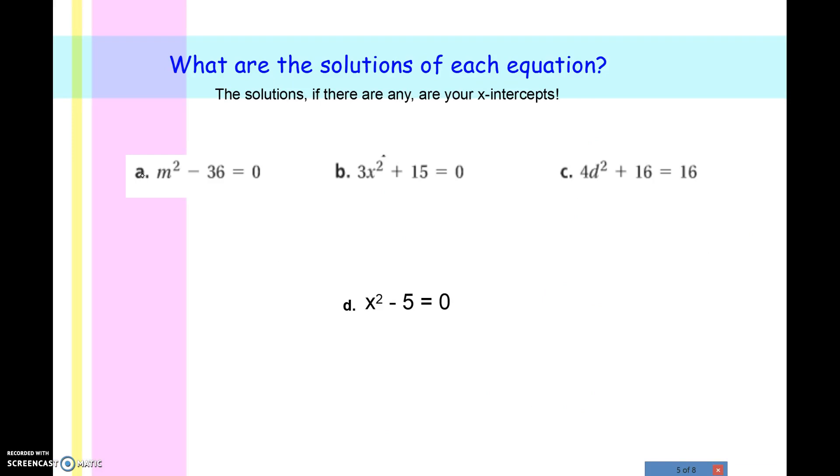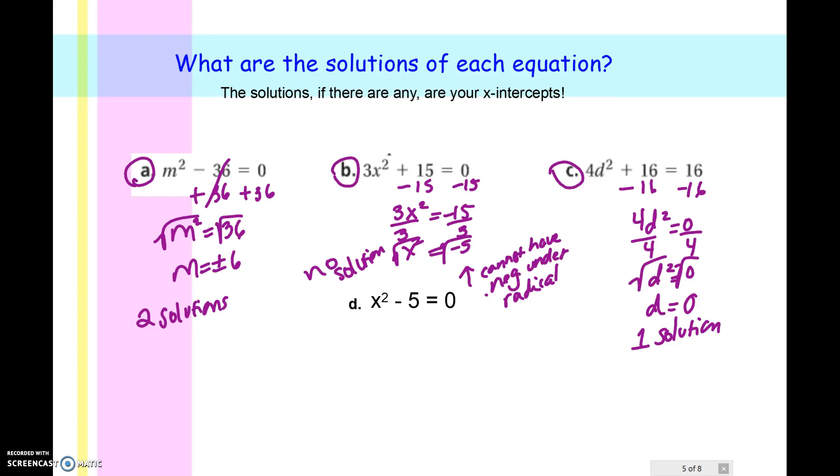Go ahead and try the first three. Okay, so on your first one, you see that you ended up with a positive 36 under the radical. You take the square root, you get plus or minus 6. So you have two solutions, a positive 6 and a negative 6. In your x-intercepts, it would be 6, 0 and negative 6, 0.